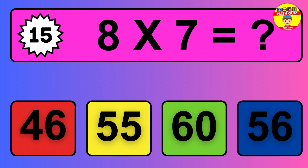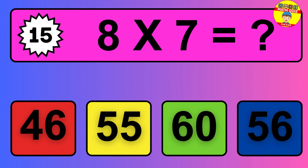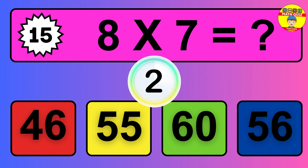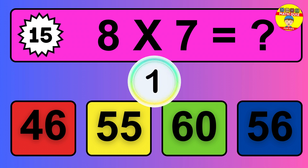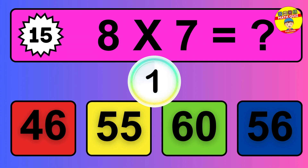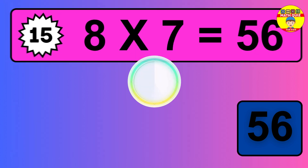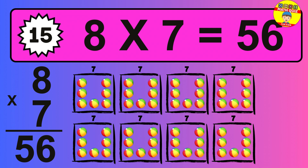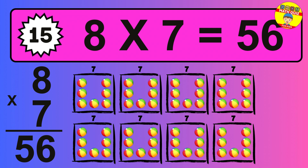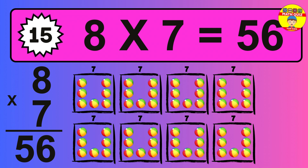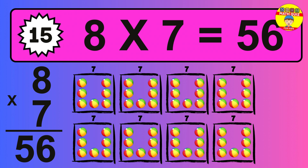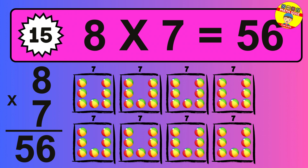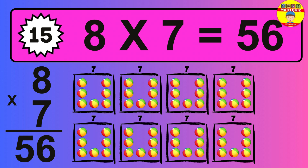Question 15. 8 times 7 equals what? So the answer is 8 times 7 is 56. To calculate, we have 8 groups with 7 balls each one. So how many balls do we have? 56 balls.